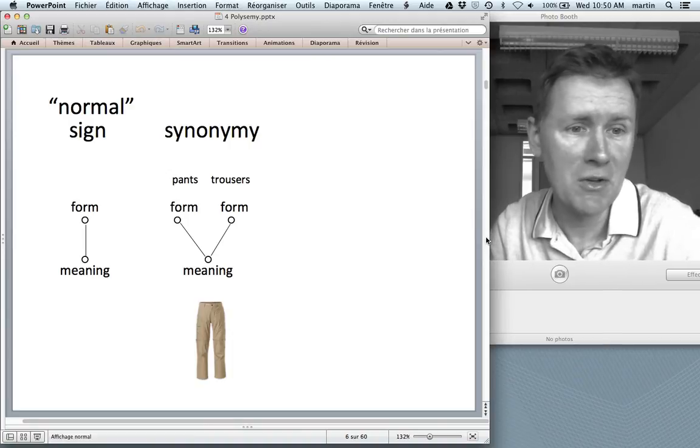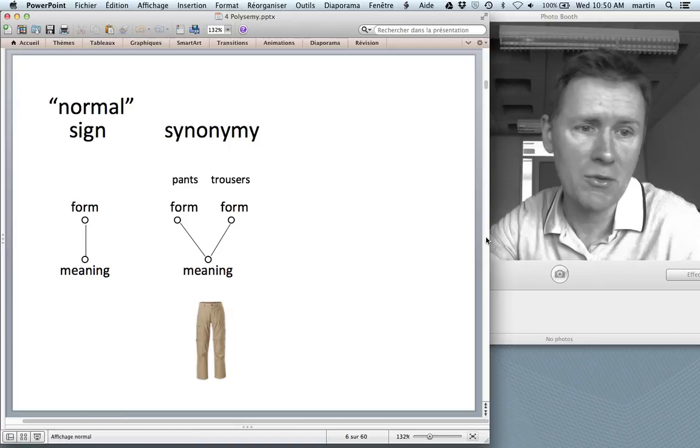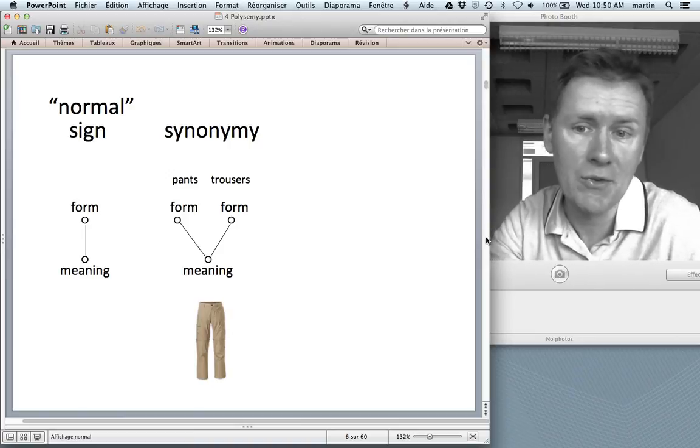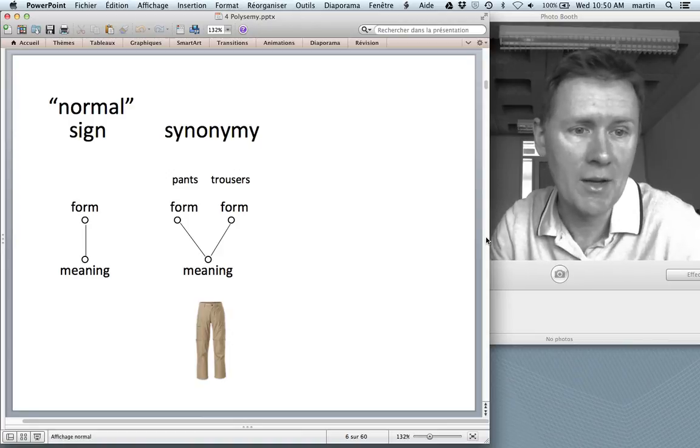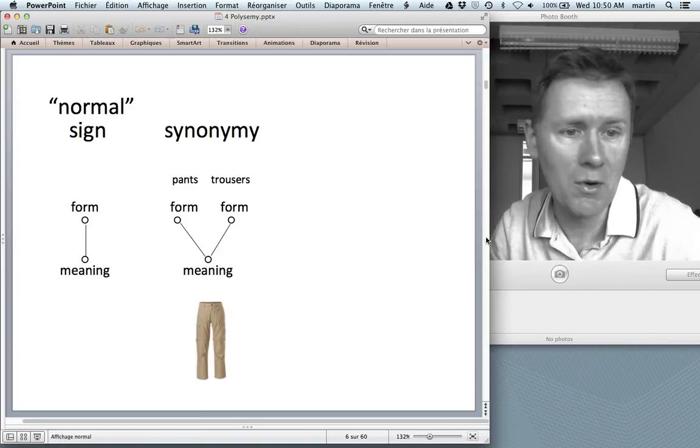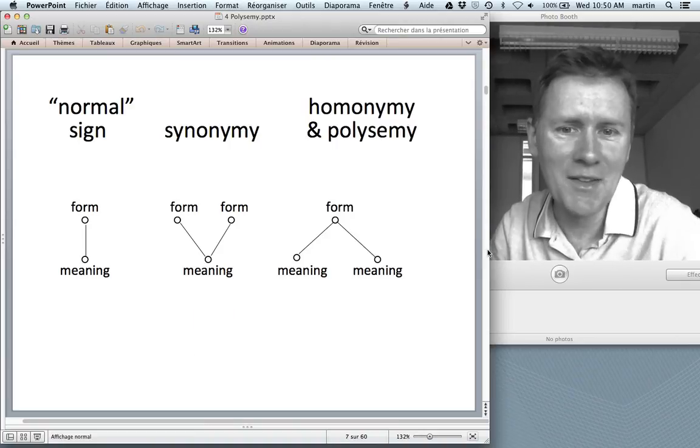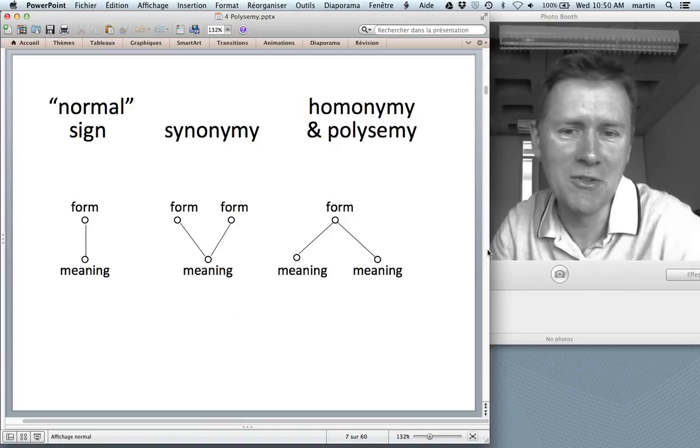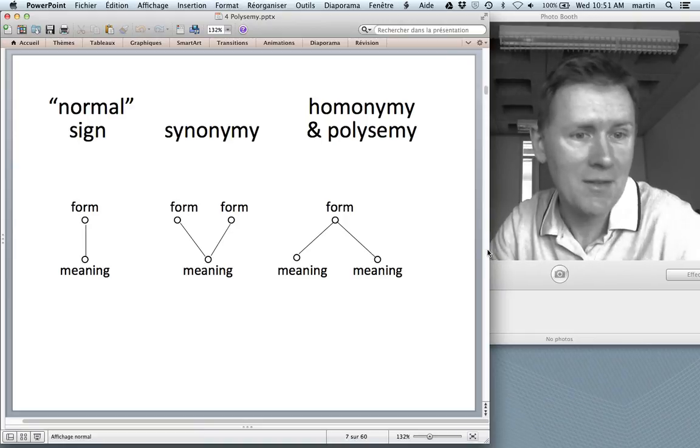For instance, we have the phenomenon of synonymy in which several forms map onto more or less the same meaning. So, pants and trousers both map onto the meaning of a piece of clothing that you can put on the lower half of your body. And then, of course, there is the opposite scenario where a single form maps onto several meanings, and that is polysemy.